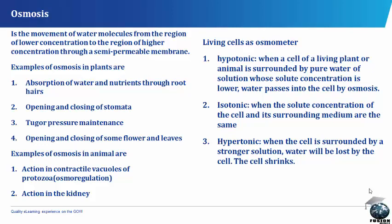Living cells as osmometers. Hypotonic: when a cell of a living plant or animal is surrounded by pure water or a solution whose solute concentration is lower, water passes into the cell by osmosis. Isotonic: when the solute concentration of the cell and its surrounding medium are the same. Hypertonic: when the cell is surrounded by a stronger solution, water will be lost by the cell and the cell shrinks.